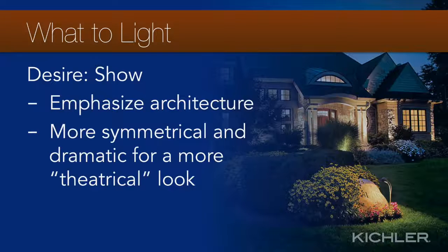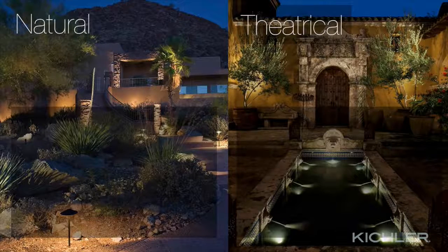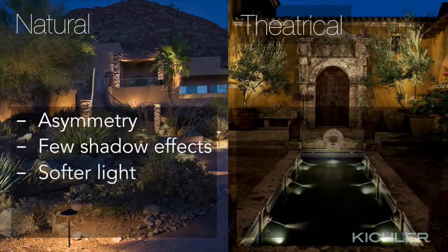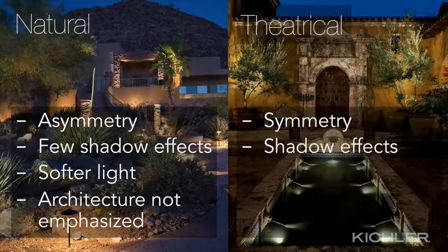For customers who desire to show their property: make sure the lighting hits the major elements of architectural interest — columns, arches, peaks, gables, coins, stone and brick textures. A more symmetrical design generally reads as more showy, so create regular rhythms when lighting plant materials, trees, and walls. Two terms that come up are natural and theatrical. The natural look is marked by asymmetry, a few shadow effects, and softer lights, with the architecture receiving some but not heavy emphasis.